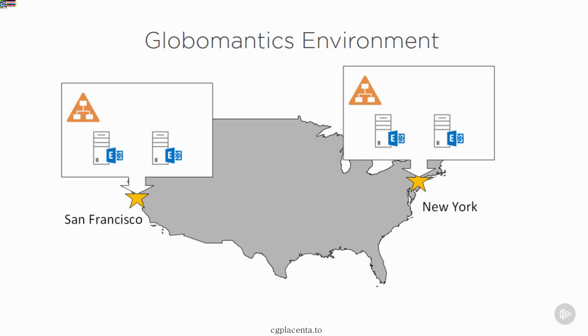In the last two courses, which were about mailbox databases in Course 1 and client access in Course 2, we looked at how the Exchange 2016 mailbox server role can be viewed in terms of front-end services, which is the client access part, and back-end services, which is the mailbox databases part. For this course about transport, the same front-end and back-end concepts still apply. There are in fact four transport services on an Exchange 2016 mailbox server.